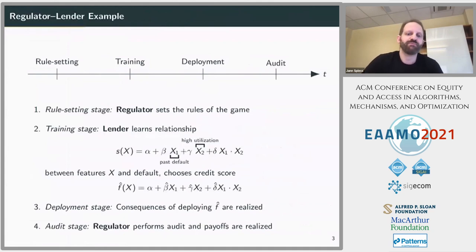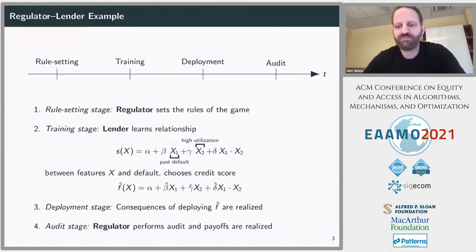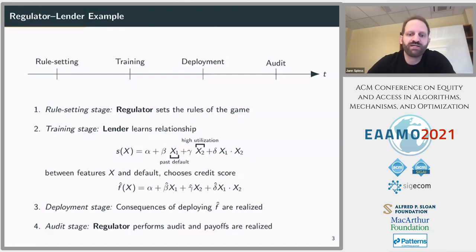Let me set up our model. The paper has a very general model, but today I use a stylized version in the context of lending. The model has four stages. The first is a rule-setting stage, where the regulator sets the rules of the game. The second is a training stage, where a lender learns the relationship between different features available in the data and the probability of default, and then uses those to choose a credit scoring function that is used to allocate credit.